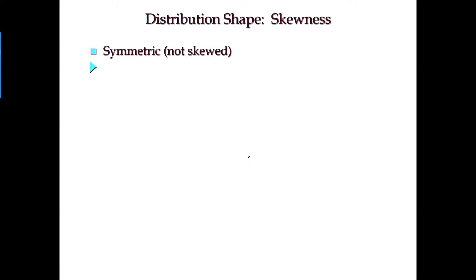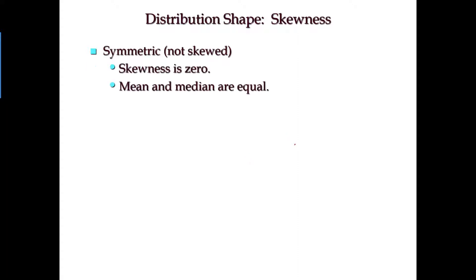The first diagram I show you is called a symmetric distribution. If you use Excel to calculate skewness for this shape, you will end up with zero. So if the skewness value is zero or very close to zero, the distribution is indicated as symmetric. You can also base it on the relative value of mean and median — if mean is approximately equal to median, you also have a symmetric distribution.